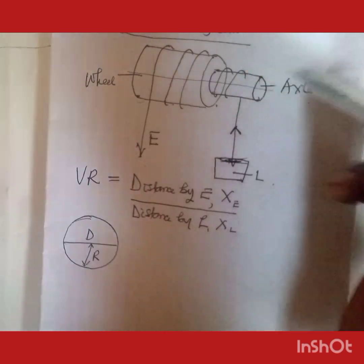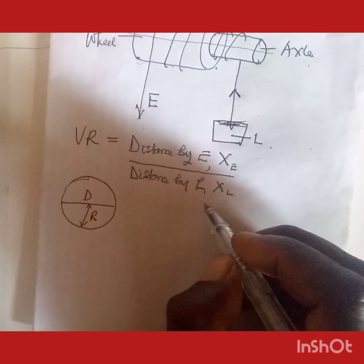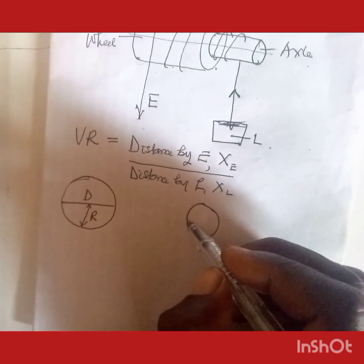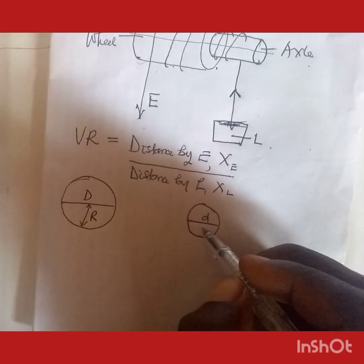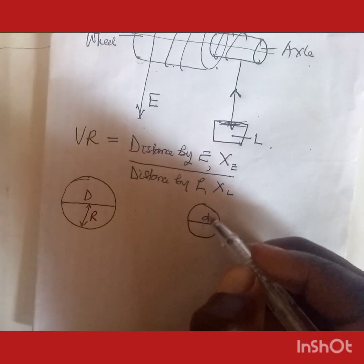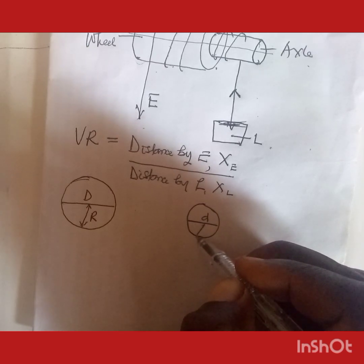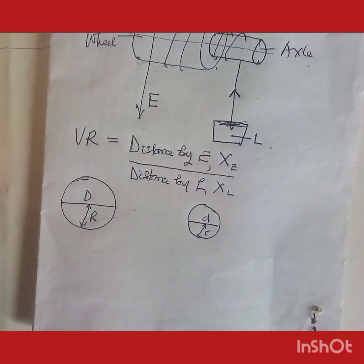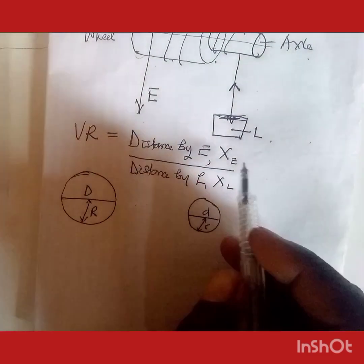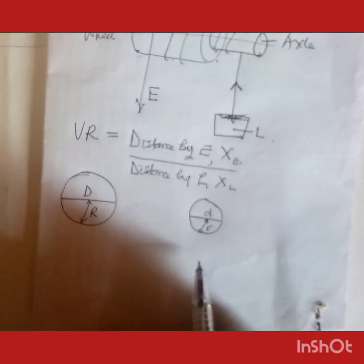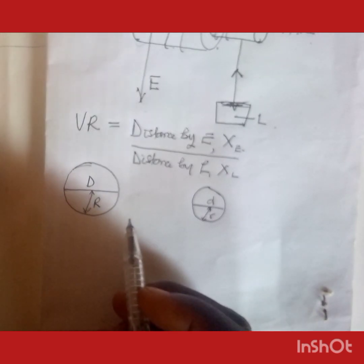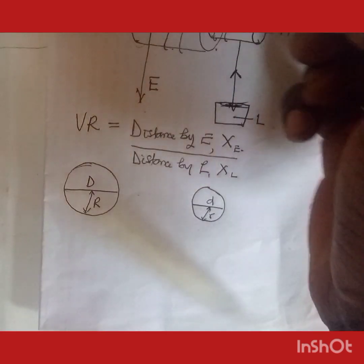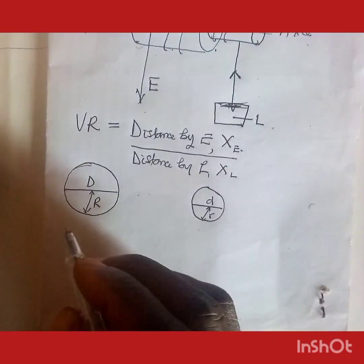The axle is also a circle with diameter d (lowercase) and radius r (lowercase). Applying the circumference formula, the circumference of the cross section of the wheel is given by...